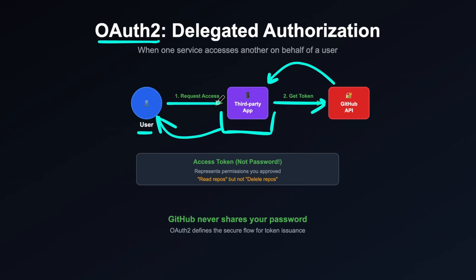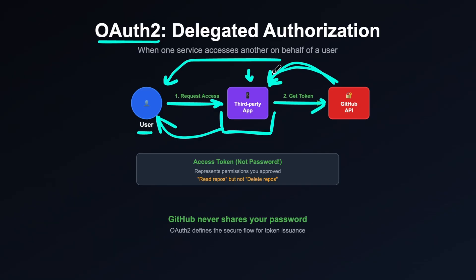You as a user send a request with the third-party app to request access to your repositories. You specify what repositories the app can access and what it can do — create, read, update, delete, or whatever permissions you set. GitHub then sends them a token containing only those approved permissions. OAuth 2 defines the flow for securely issuing and validating those tokens, so you give them an access token — not your password — representing the permissions you personally approved, such as reading specific repos or pushing to them but not deleting them.